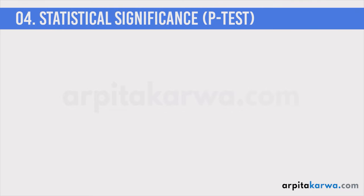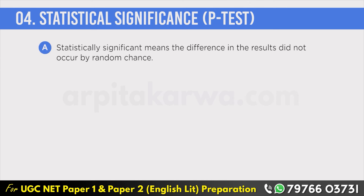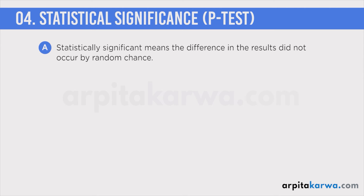The first important test involved with hypothesis testing is known as the P-test. P-test is also known as the statistical significance test, where we want to see whether the result we are getting occurred by random chance or not. In research we get a result at the end and we want to know whether that result happened by chance or not.